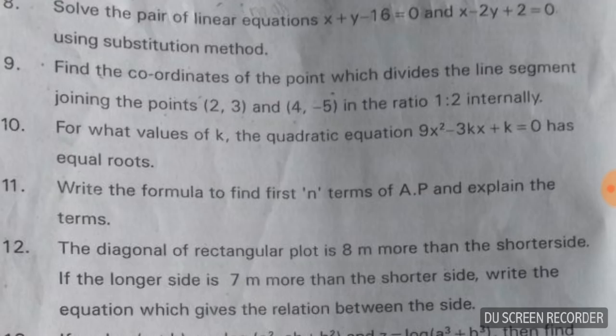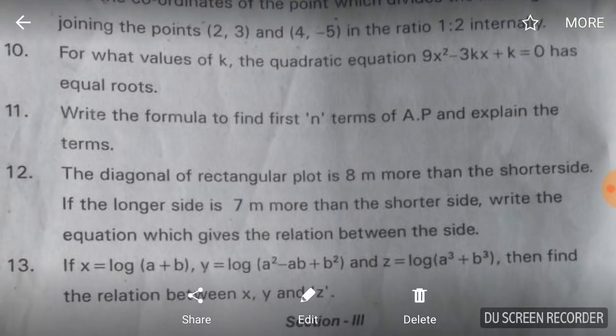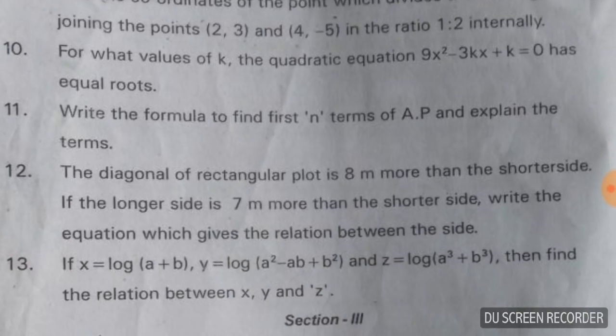For what values of k does the quadratic equation 9x² - 3kx + k = 0 have equal roots? Use the discriminant formula: b² - 4ac = 0. Here b = -3k, c = k, a = 9. Substitute the values to get the value of k.